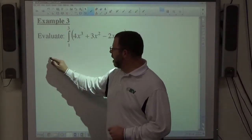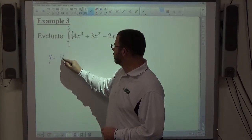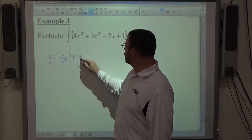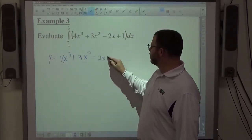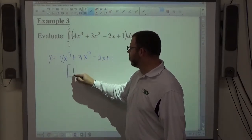So again, what the integral establishes for me is what the function is, which is 4x³ + 3x² - 2x + 1. My interval starts at 1, ends at 3.